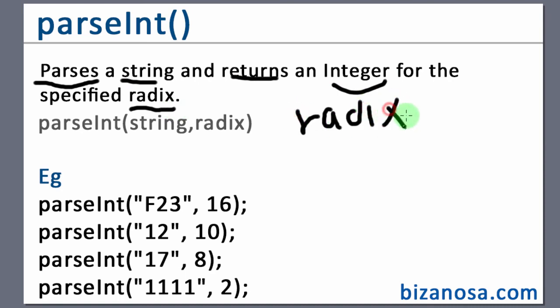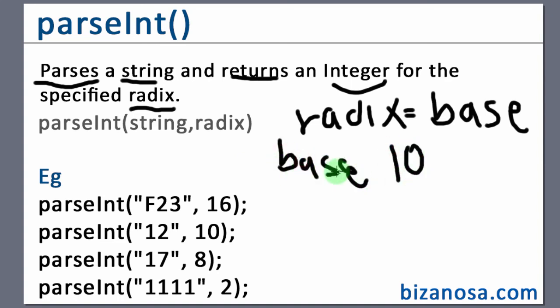A radix is the base of the number. So we have different radices. The radices that we mostly use is base 10, which is a decimal numeral system. You don't really have to worry much about this because it's just something you need to know and that's enough.